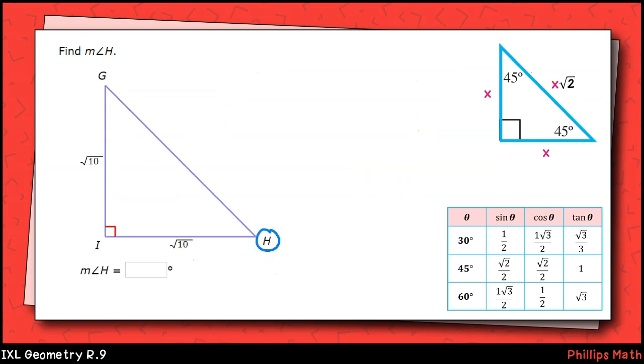This time, we're looking for the measure of angle h. Well, we have two congruent sides with the measure of the square root of 10. Can you predict why I put these reference figures on the right? Hopefully, you notice that this is an isosceles right triangle, meaning it's a 45-45-90 right triangle. That means there's nothing to solve here. The measure of angles h and g both are 45 degrees.